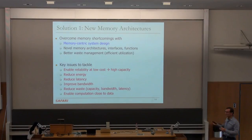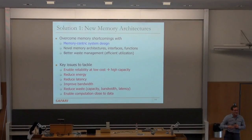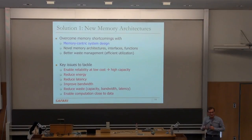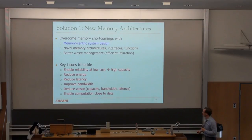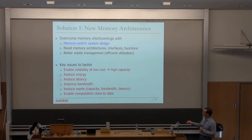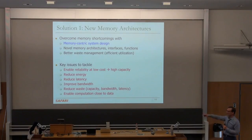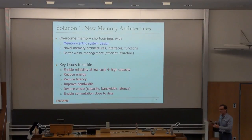Reducing latency — we're going to talk a lot about that. Reducing latency could go at odds with reliability because if you reduce latency, you may start getting errors if you don't satisfy the timing of the circuit. The quick question is how do you reduce latency while being reliable? Reducing latency is usually good for energy, because you're activating things for a much shorter amount of time and driving less power. Improving bandwidth is also important. And reducing waste — I just gave you some examples. Enabling computation close to data could enable a lot of these things simultaneously.